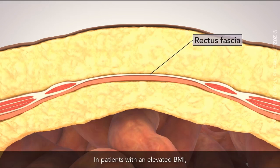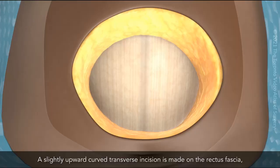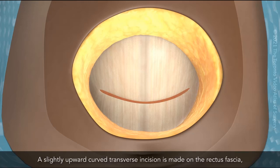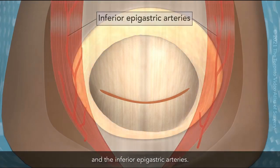In patients with an elevated BMI, the excess adipose tissue may stretch the rectus fascia and displace the rectus abdominis muscles laterally. A slightly upward curved transverse incision is made on the rectus fascia, keeping a safe distance from the rectus abdominis muscle and the inferior epigastric arteries.